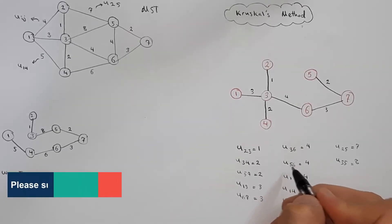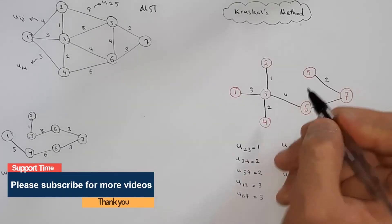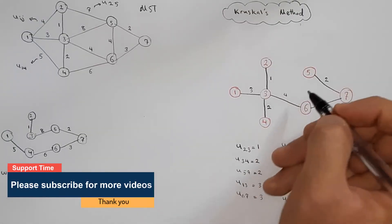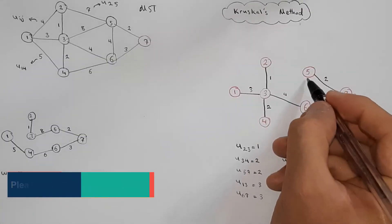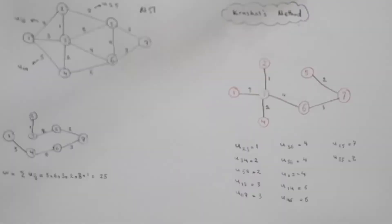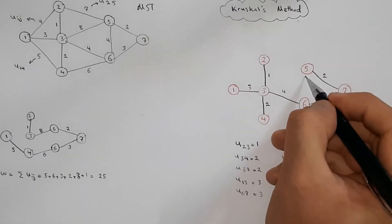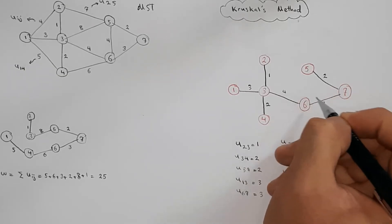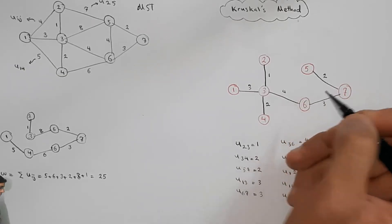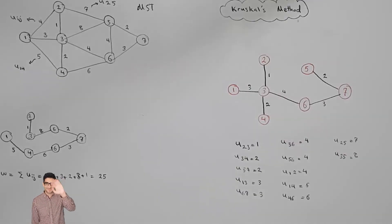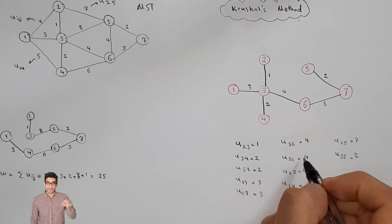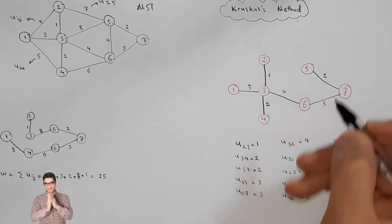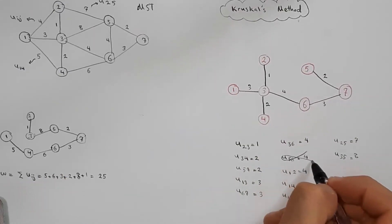Then we should draw a line between 5 and 6 — but oops, you cannot draw this line. Why? Because drawing this line would create a loop, which is not allowed. So you shouldn't draw this line — if you draw it, you get a loop, which is not allowed.